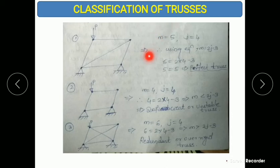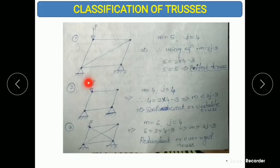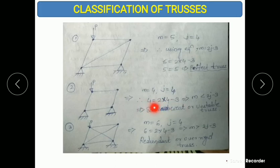In the second example: m = 4, j = 4. Substituting into m = 2j − 3: right side = 2×4 − 3 = 5. Left side is 4, right side is 5, so m < 2j − 3 — this is a deficient or unstable truss. You will likely get at least one MCQ question from this concept.